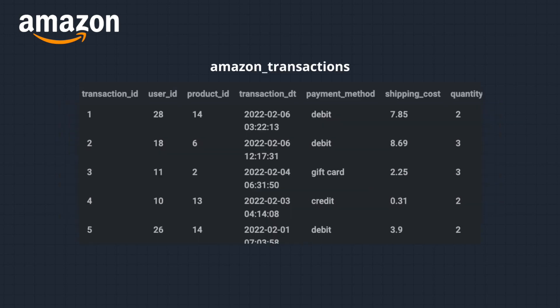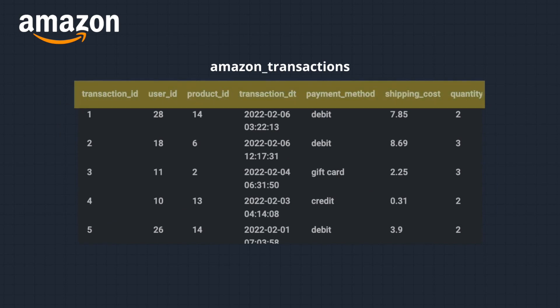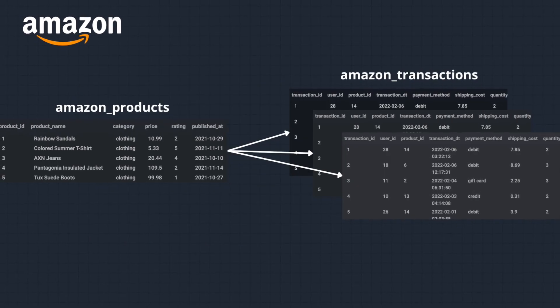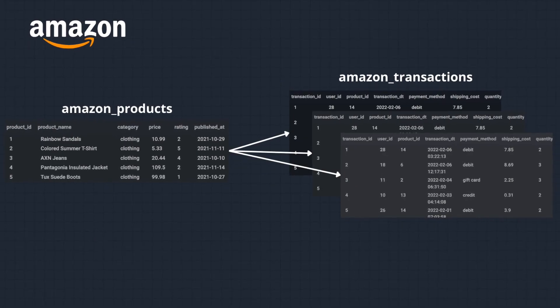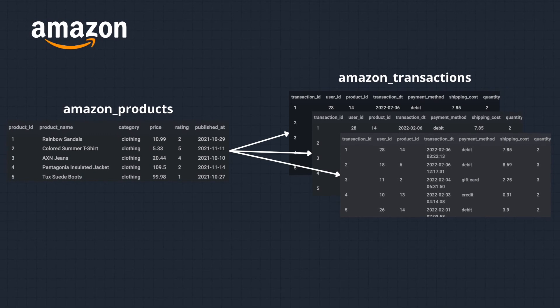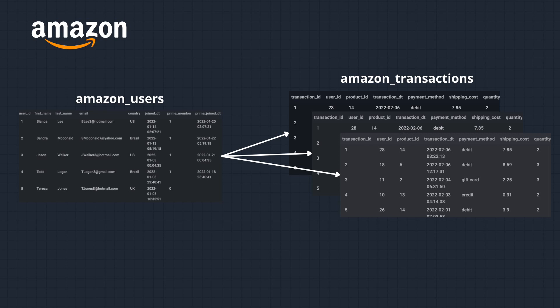The Amazon transactions table contains transaction ID, user ID, product ID, transaction date, payment method, shipping cost, and quantity. We also need to understand the relationships among the tables. The transaction table is the base table. There is a many-to-one relationship between the transaction and product tables with the common key being product ID, and also a many-to-one relationship between the transaction and user tables with the common key being user ID.